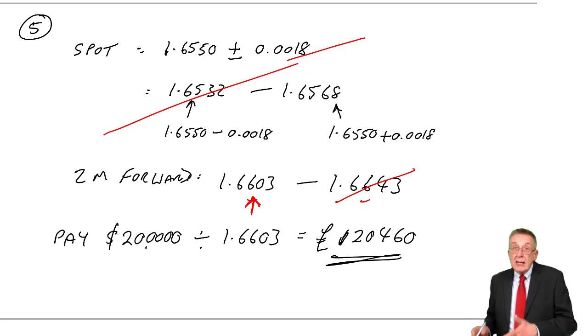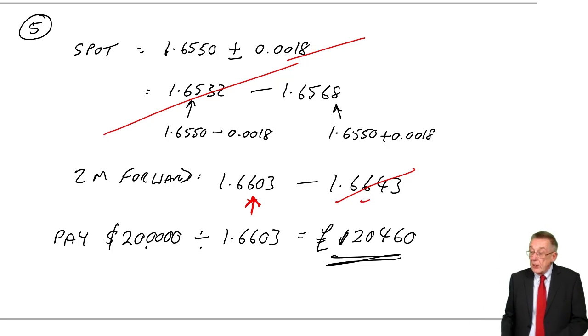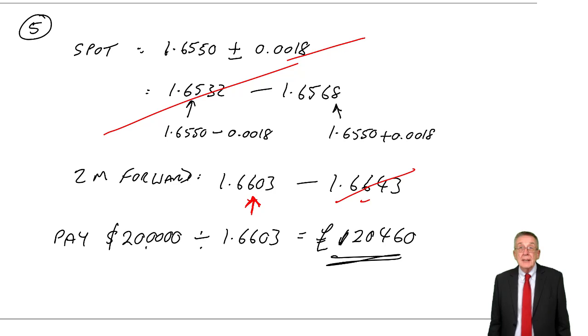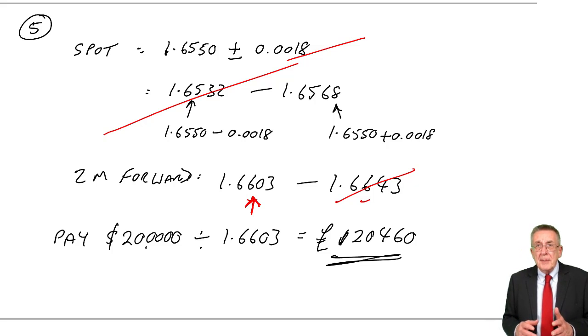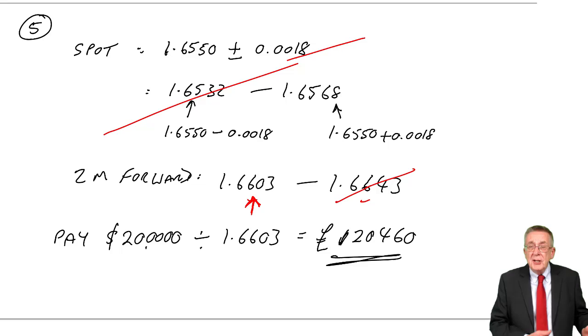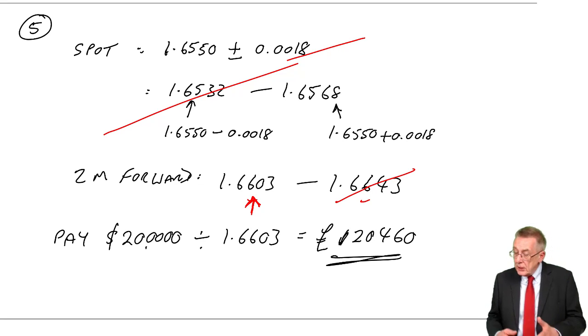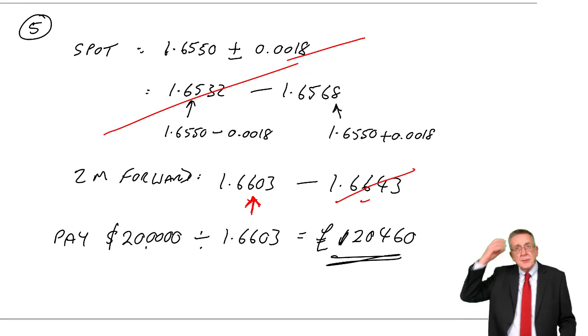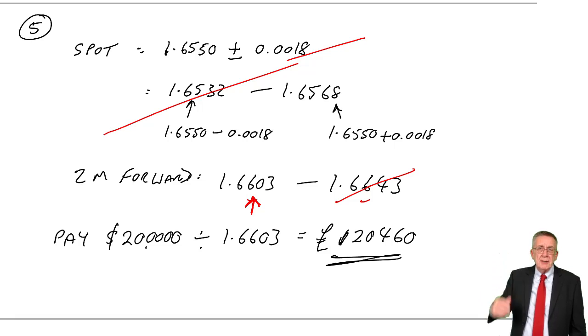So, it's actually a very quick question. There'll be two marks. But you've really got to be on the ball. You've got to be 100% certain about what forward rates are, but also which rate to use. You're not going to want to waste time messing around saying, oh, shall I use this rate, shall I use that rate?